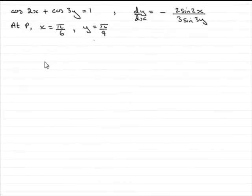Now in order to find the equation of the tangent at the point P on the curve cos 2x plus cos 3y equals 1, what we need to do is essentially find the gradient when x is π/6 and y is π/9.